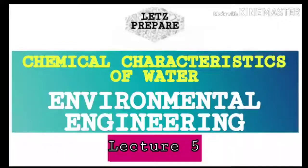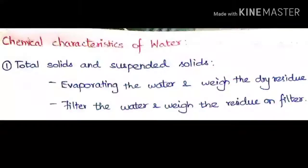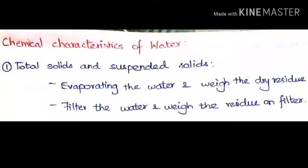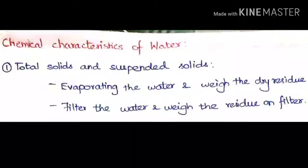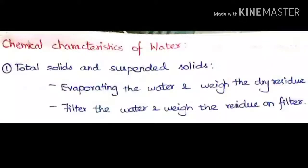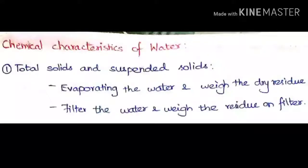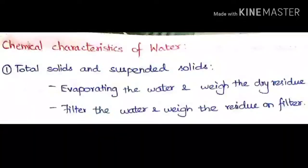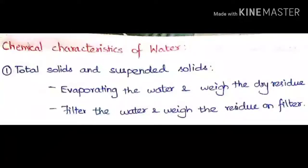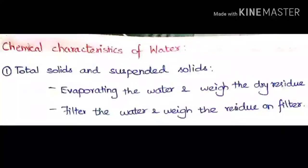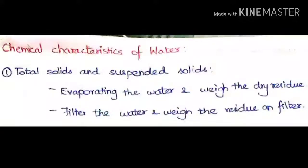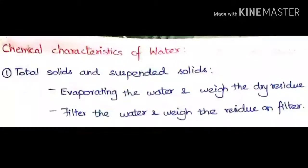Let's look at the chemical characteristics of water. The first characteristic is total solids and suspended solids. We have seen dissolved solids previously; dissolved plus suspended gives total solids. Total solids can be found by evaporating the water and weighing the dry residue left out. For suspended solids, filter the water and dry the residue left in the filter.